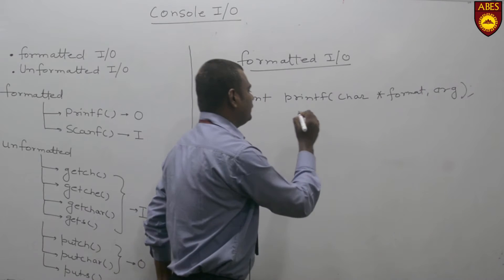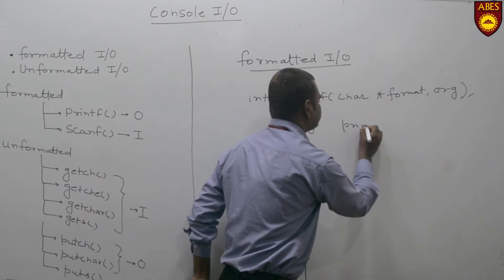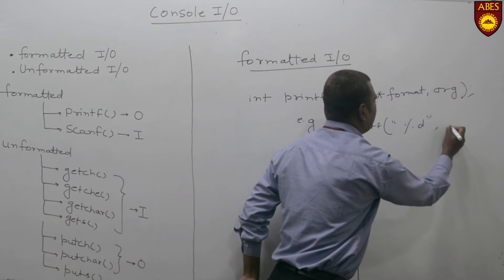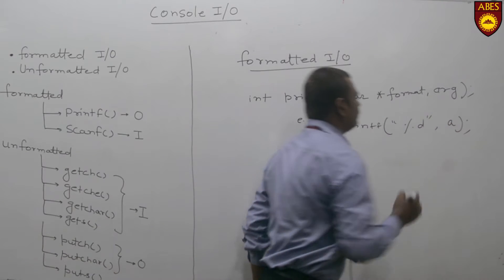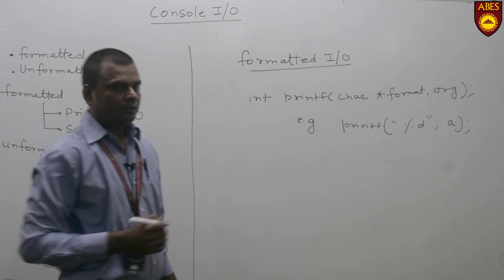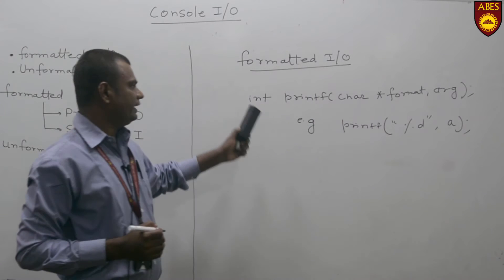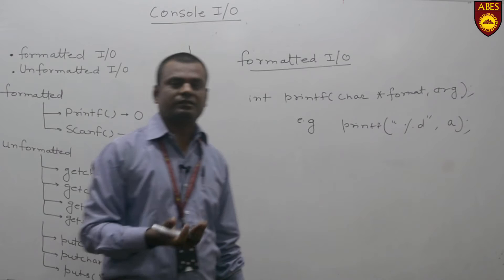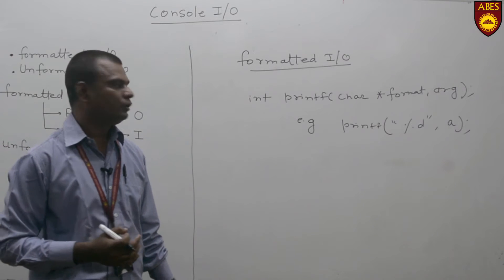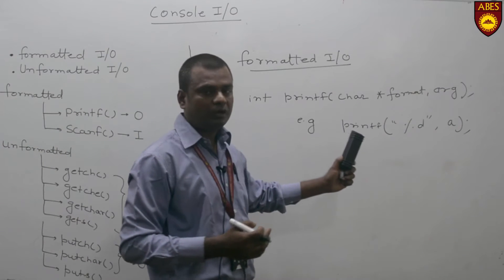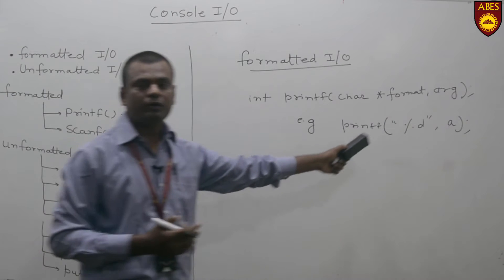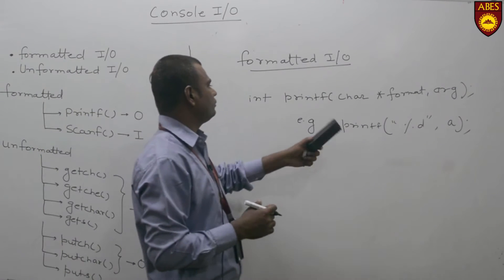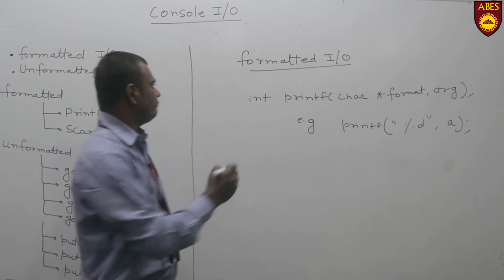For example: printf("%d", a). The return type of printf is an integer. It returns an integer value — whatever it had printed on the screen — specifically the number of characters that have been printed on the screen.